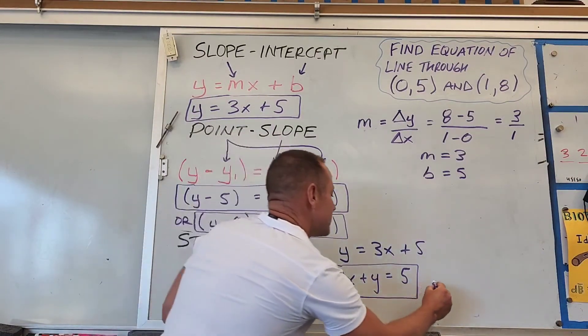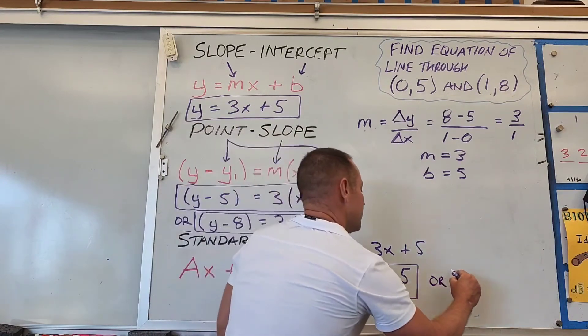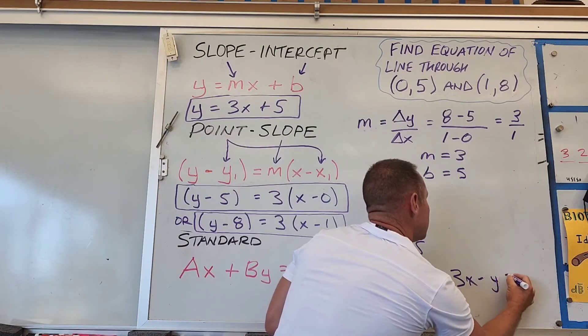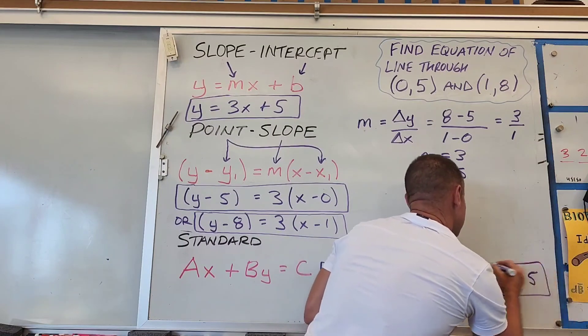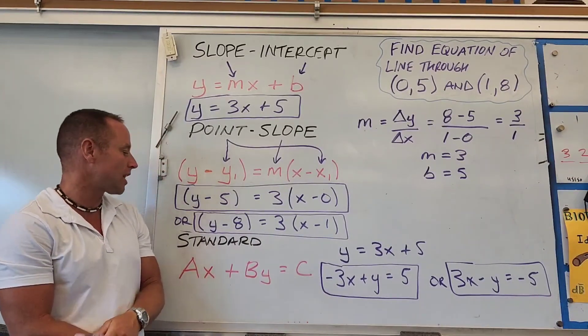Another possible answer is 3x minus y equals -5. Both of these are correct for standard form.